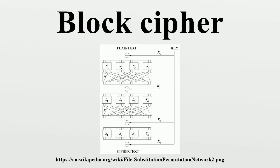The modern design of block ciphers is based on the concept of an iterated product cipher. Product ciphers were suggested and analyzed by Claude Shannon in his seminal 1949 publication Communication Theory of Secrecy Systems as a means to effectively improve security by combining simple operations such as substitutions and permutations. Iterated product ciphers carry out encryption in multiple rounds, each of which uses a different sub-key derived from the original key. One widespread implementation of such ciphers is called a Feistel network, named after Horst Feistel, and notably implemented in the DES cipher.